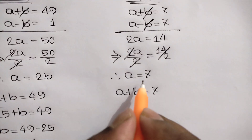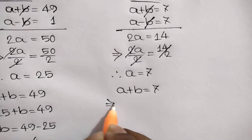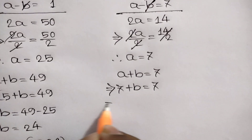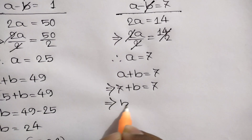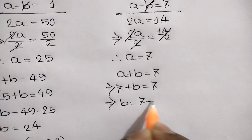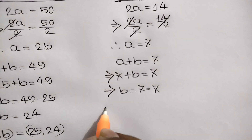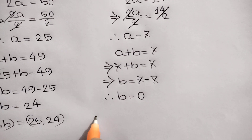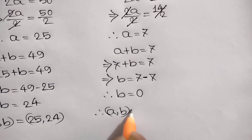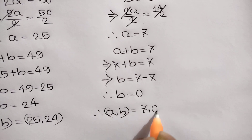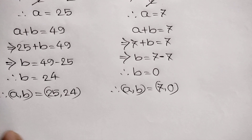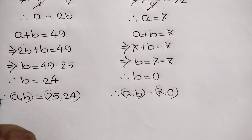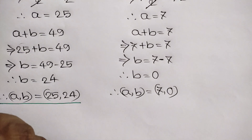Since a is equal to 7, we write 7 plus b is equal to 7. Taking 7 to the right side, b is equal to 7 minus 7, so the value of b is equal to 0. Therefore, Case 2 gives a, b equal to 7 and 0.